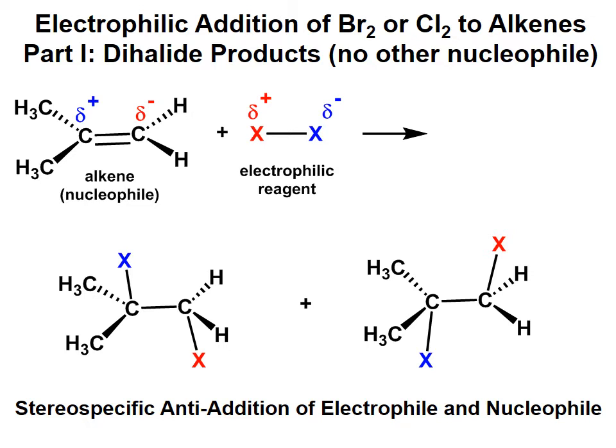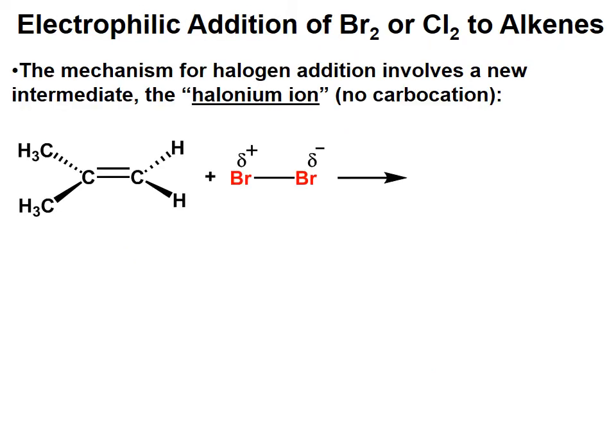So let's look at the mechanism for this reaction. Let's look at our alkene and label the carbons partial negative and partial positive. The pi electrons of the alkene are going to grab the electrophile. One of the bromines is labeled with a partial positive charge — the electrophile. As that happens, the bromine-bromine bond is going to break, and we're going to form a Br minus, which is going to be a nucleophile for a later step.